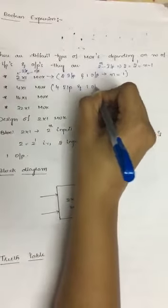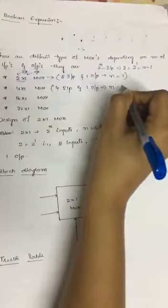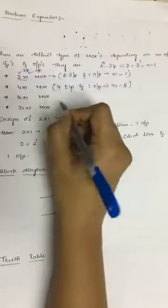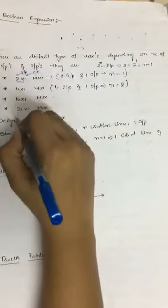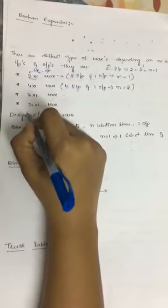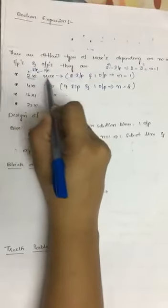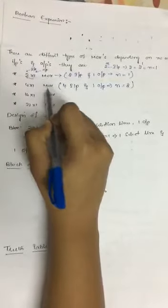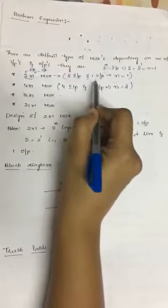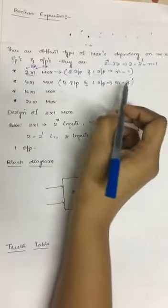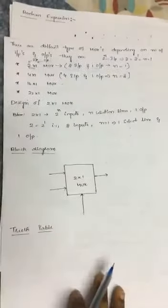For a 4×1 MUX, you have 4 inputs and 1 output, and since 4 equals 2^2, n equals 2, so you have 2 selection lines. That's how the different types of multiplexers are defined: a 2×1 MUX has 2 inputs, 1 output, and 1 selection line.